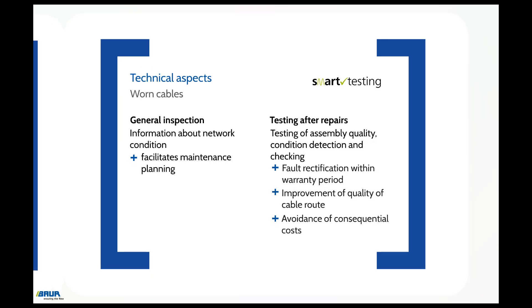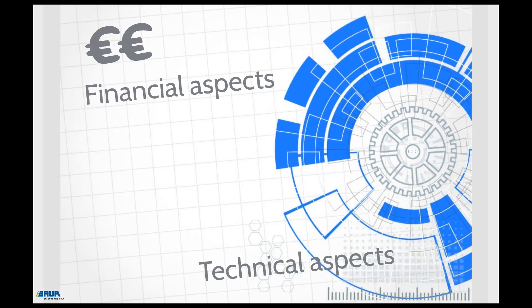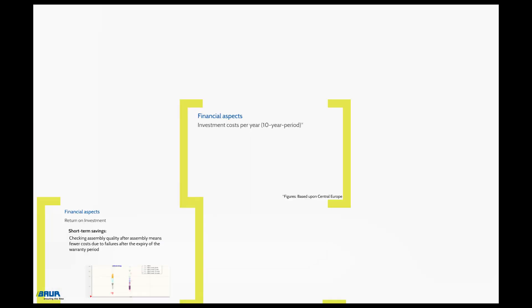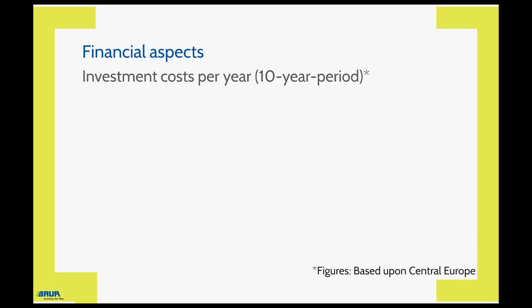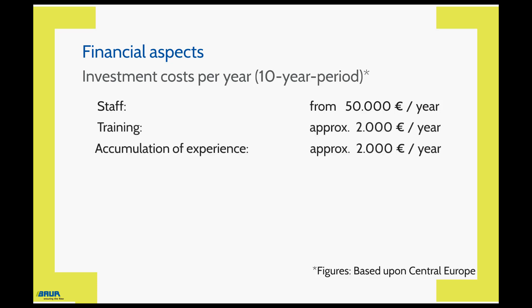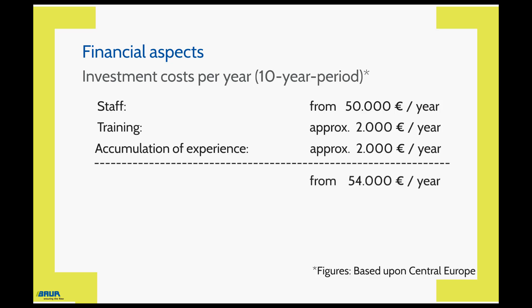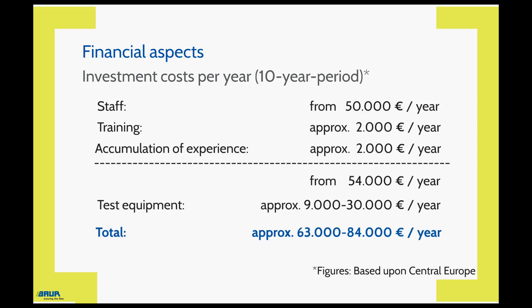In the next section, we will compare the investment costs with the benefits of diagnostics in numerical terms. When considering this subject from a financial perspective, the following investment costs should be planned over a 10-year period. Staff are required for cable testing and diagnostics, with costs starting at around €50,000 per year. Adding training and investment in building staff experience brings staff and expertise costs to around €54,000 per year. In addition, expenditure between €9,000 and €30,000 per year must be allowed for equipment, giving a total budget of €63,000 to €84,000 per year.